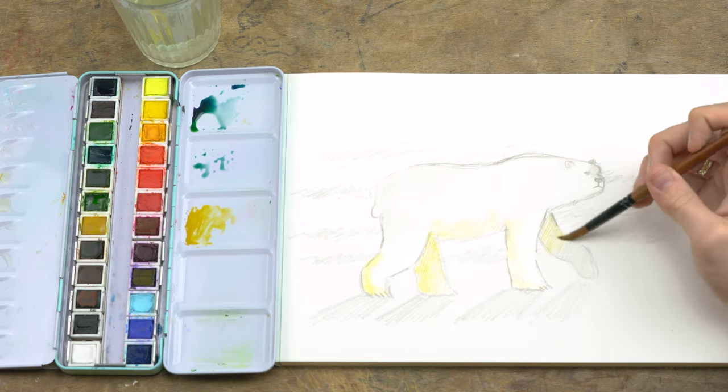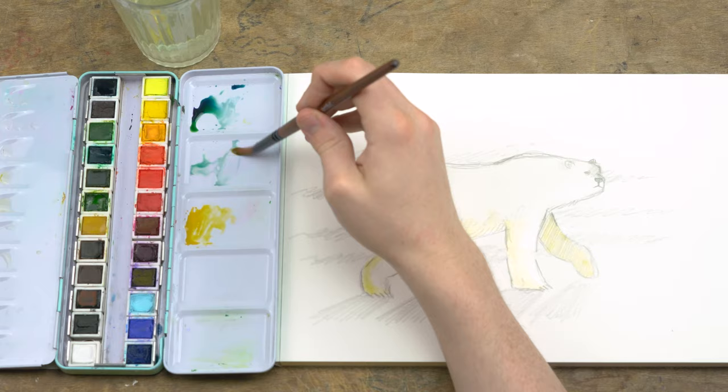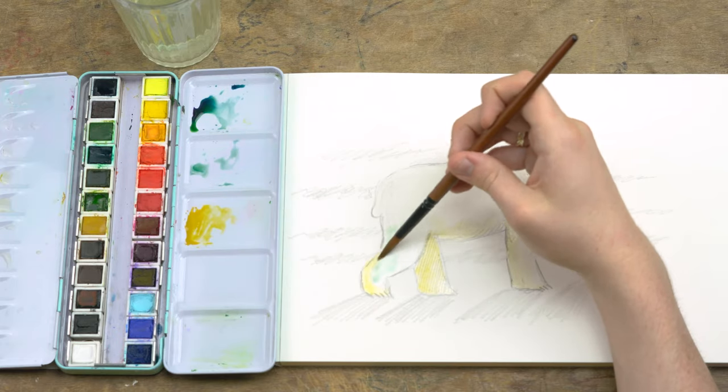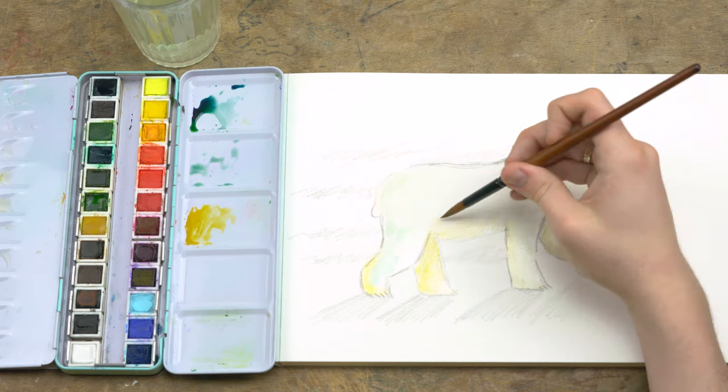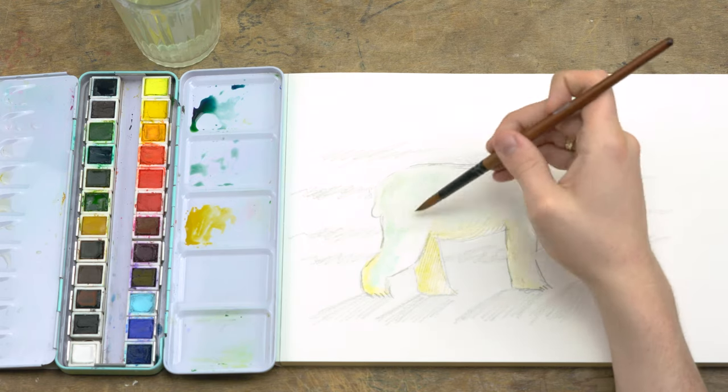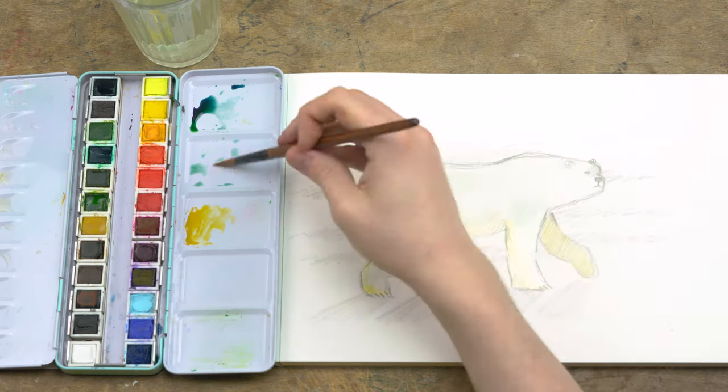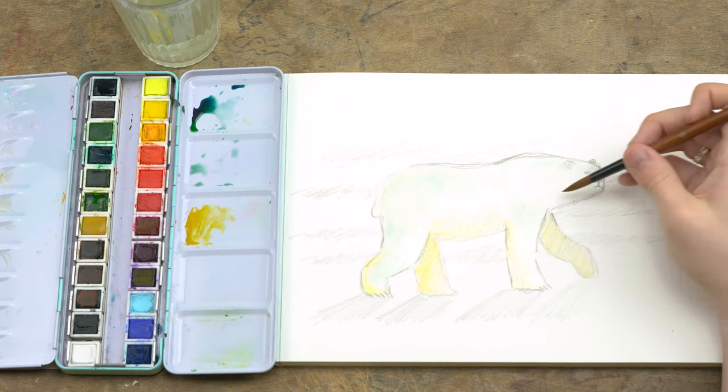Next I'm using that nice light blue green and I'm using that for the rest of the body. You don't want to use too much paint because a polar bear isn't blue, but you're just trying to give that illusion of the different heat and how cool the body of the polar bear would be.